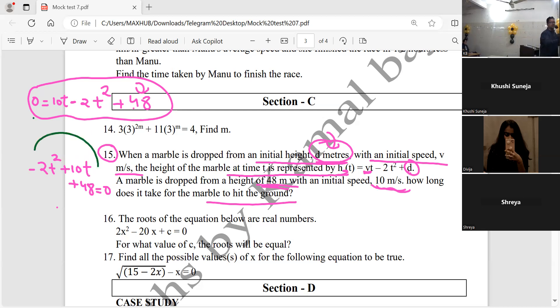What do we have? Minus 2t square plus 10t. How will it become? Minus 2t square plus 10t minus 48. 10 times 10 is 100.